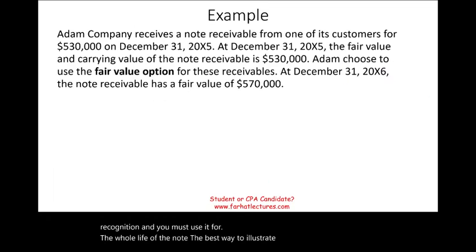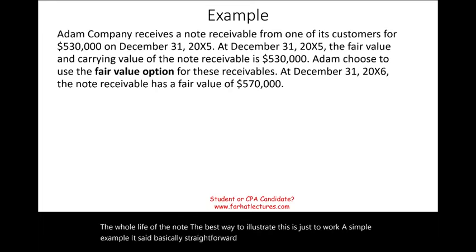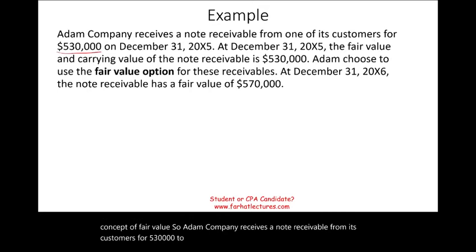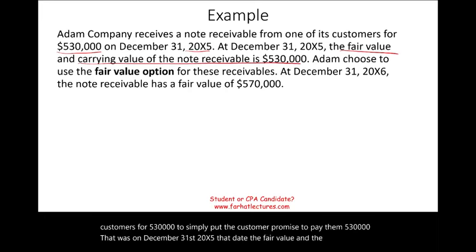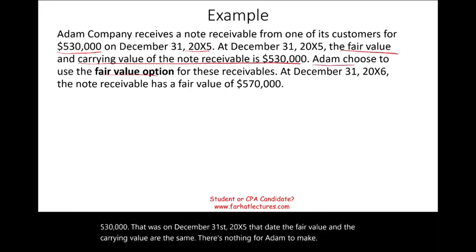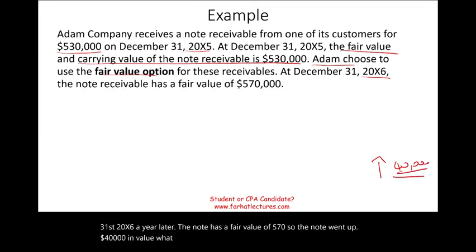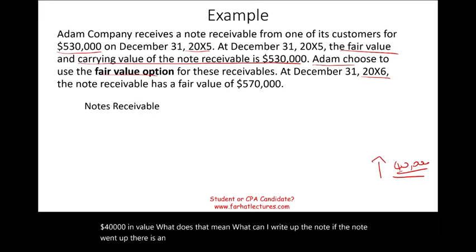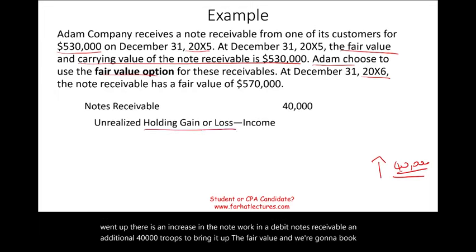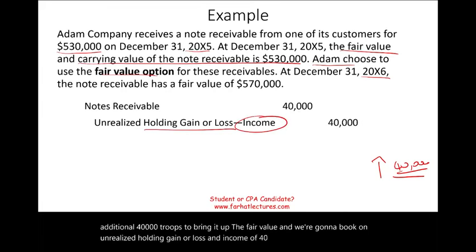The best way to illustrate this is a simple example. Adam Company receives a notes receivable from its customer for $530,000 on December 31, 20X5. At that date, the fair value and the carrying value are the same, so there is nothing for Adam to record. Adam chooses the fair value option for this receivable. On December 31, 20X6, the note has a fair value of $570,000 — it went up $40,000. We debit notes receivable $40,000 to bring it up to fair value, and credit unrealized holding gain (income) $40,000 on the income statement.